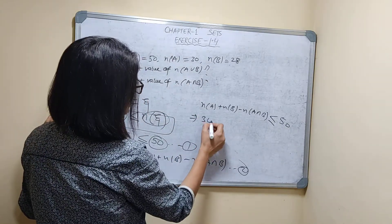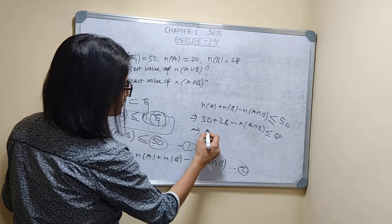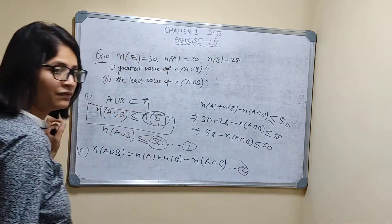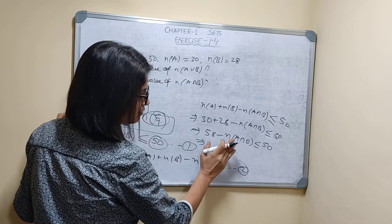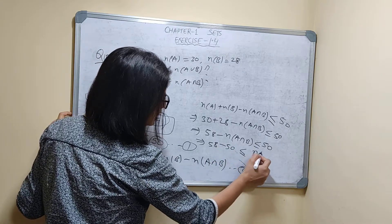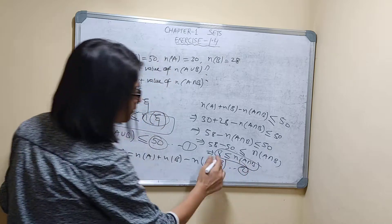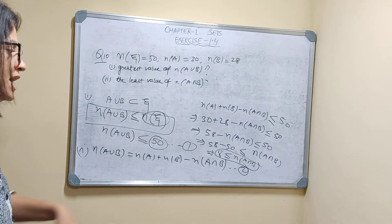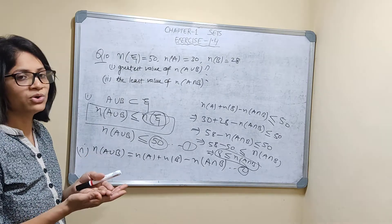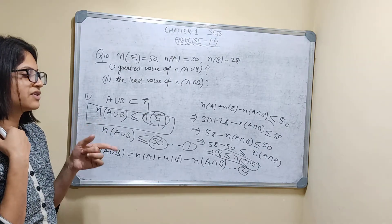So N(A∩B) ≤ 50, which means 58 − N(A∩B) ≤ 50. The negative N(A∩B) moves to the other side: 58 − 50 ≤ N(A∩B), giving 8 ≤ N(A∩B). So the least value of N(A∩B) is 8. It can't be less than 8; the minimum number of elements in A∩B must be 8.